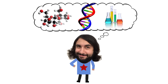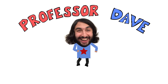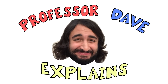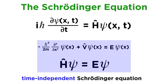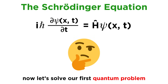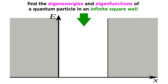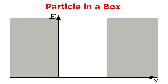Professor Dave Explains. In the previous tutorial, we learned all about the Schrödinger equation. We derived different forms of this equation and talked about what all of them represent. Now it's time to apply this knowledge in order to solve our first quantum problem — finding the eigenenergies and eigenfunctions of a particle in an infinite square well, also famously known as the particle in a box.